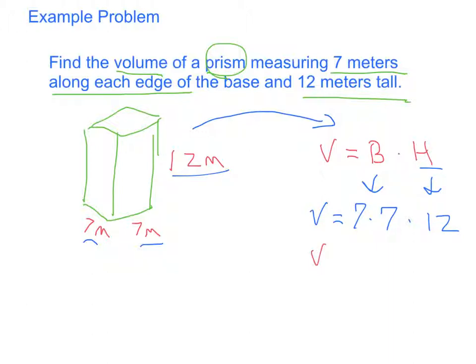I can attack this in pieces and say seven times seven is forty-nine. Forty-nine times twelve, I might need a calculator for that. But I can find out that it's five eighty-eight. And then the units, I need to put them back in. Meters. And it's volume, so it's meters cubed. And that's how you solve a word problem like this.